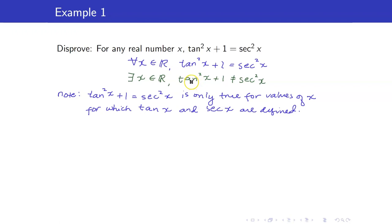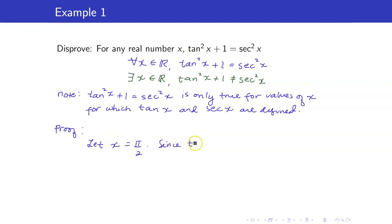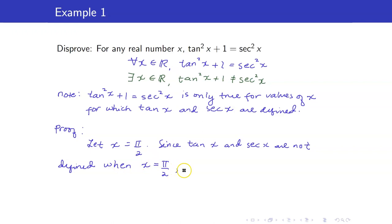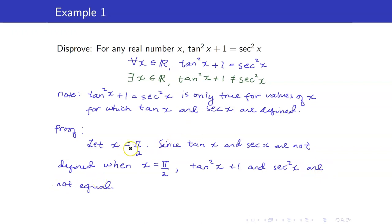We can take x equal to pi over 2. So in our formal proof, we say: take x to be equal to pi over 2. And since tangent x and secant of x are not defined when x equals pi over 2, the expressions tangent squared x plus one and secant squared x are not equal. This means that pi over 2 is a counterexample to this statement.